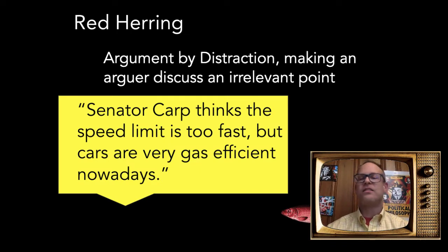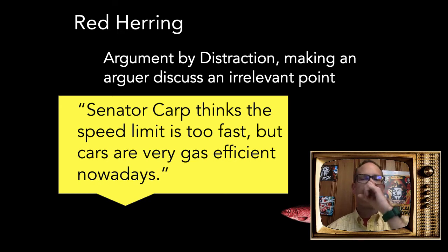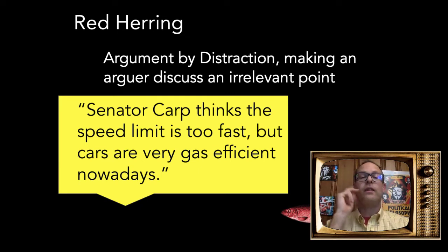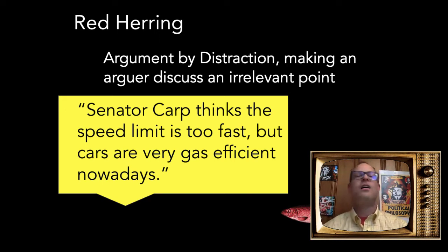Red herring — argument by distraction — involves making an arguer discuss an irrelevant point. Sometimes called a smoke screen. 'Senator Karp thinks the speed limit is too fast, but cars are very gas-efficient nowadays.' The speed limit has to do with safety, not gas efficiency. Someone might send out a tweet and instead of discussing the substance of a policy, everyone talks about the tweet being misspelled. That's a red herring — just a smoke screen.